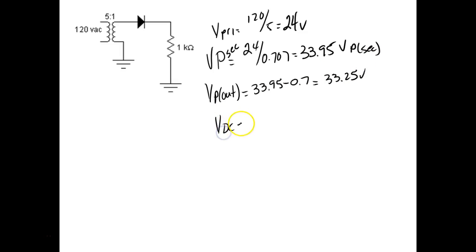And then my volts DC is going to be equal to V peak out 33.25 divided by 3.14. But it's still DC — it is technically an average, right? Because it's going to be what I measure. If I put a light bulb on this, the light bulb is going to read whatever this answer is. If I calculated the wattage on a resistor, that's what the resistor would say. A DC motor would run fine on this as long as we met the current requirements.